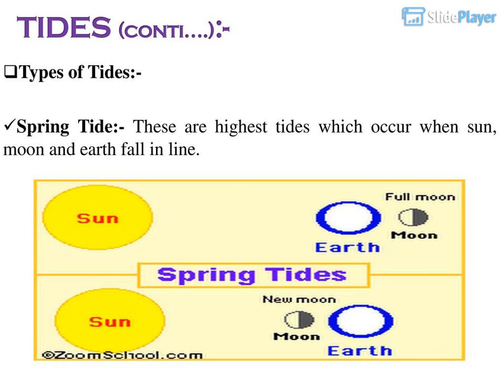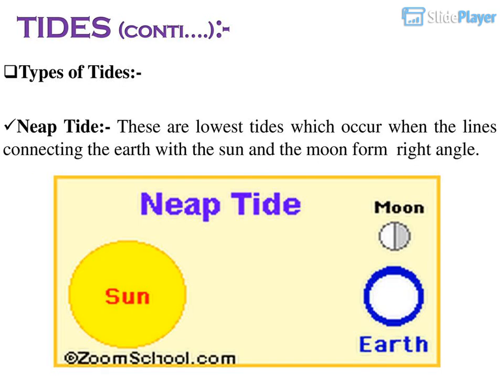Types of tides: Spring tide — these are the highest tides which occur when the sun, moon and earth fall in line. Neap tide — these are the lowest tides which occur when the lines connecting the earth with the sun and the moon form a right angle.